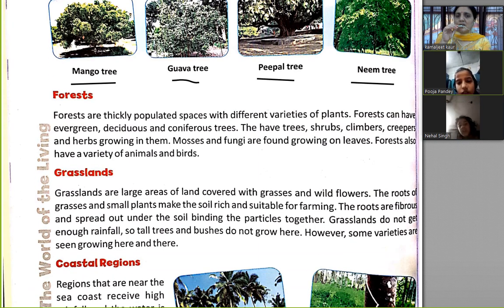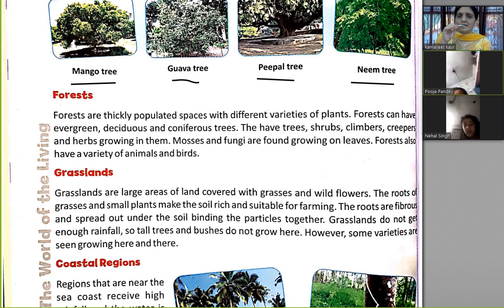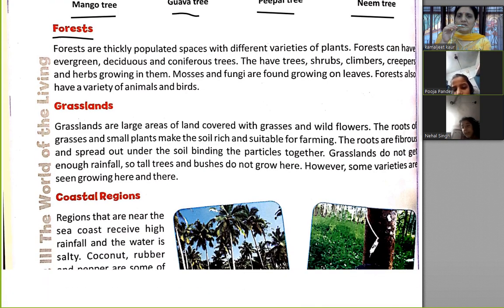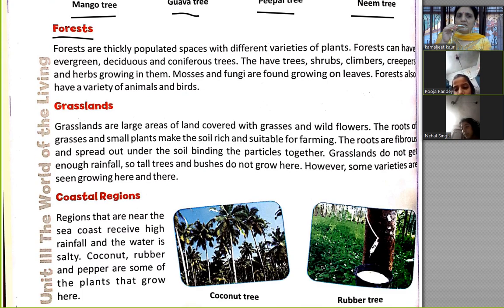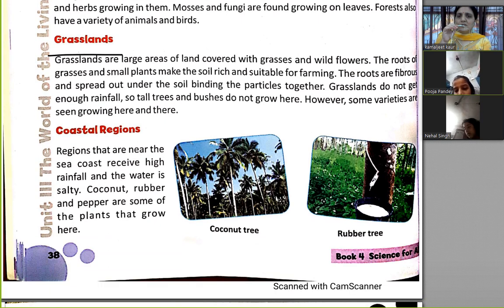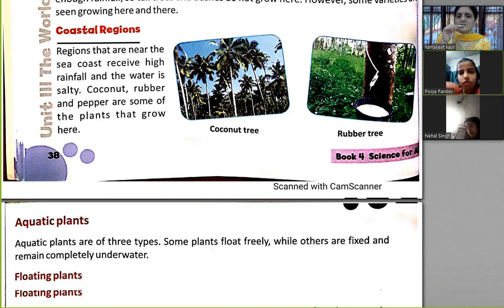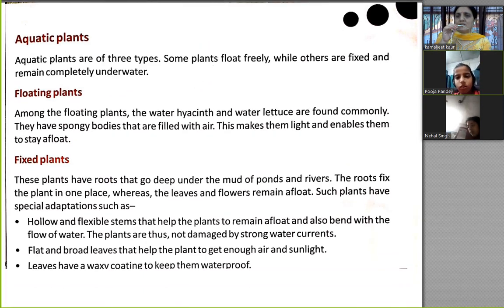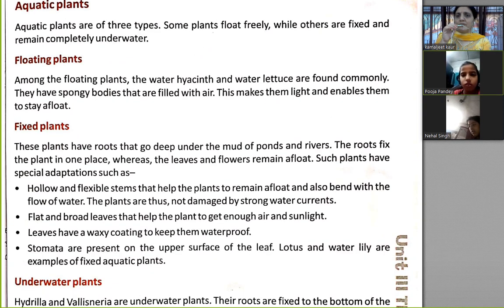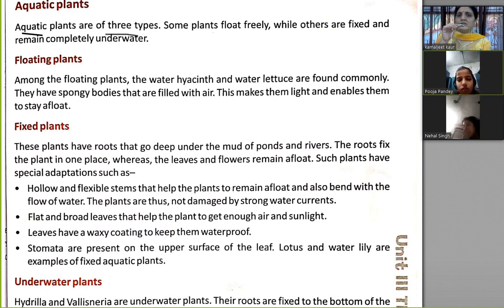Forests are thickly vegetated and we find many plants there. Grassland, coastal area, and coastal region are also habitats. Now let's start with aquatic plants — aquatic plants are of three types.